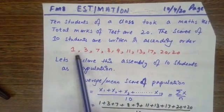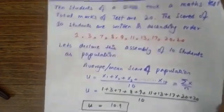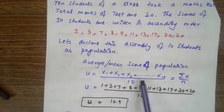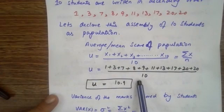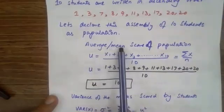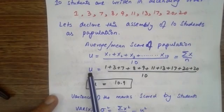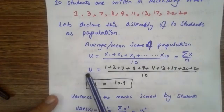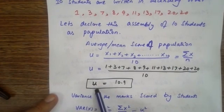This result of these 10 students is the population. Now we calculate the average of this population — we add all of them and divide by their number: Sigma X over N. We get the average mean or score of the population, which is equal to Mu.